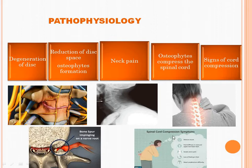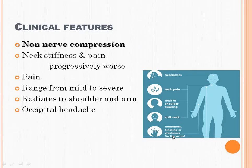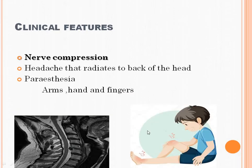This causes spinal cord compression. Now, clinical features of cervical spondylosis: when there is no nerve compression, it causes neck stiffness and neck pain. This neck pain worsens over time and ranges from mild to severe. It radiates to the shoulder and arms. Head pain is also present, mostly occurring in the occipital area.